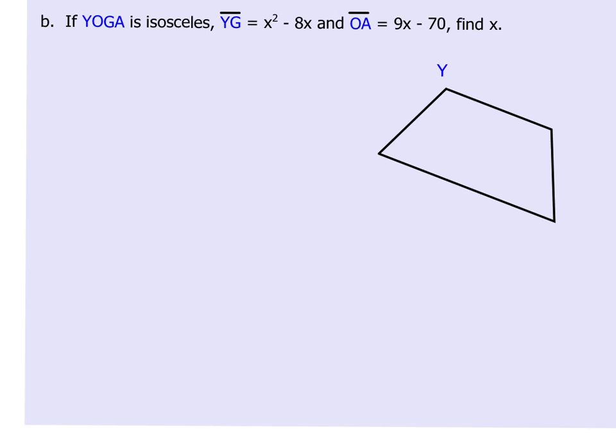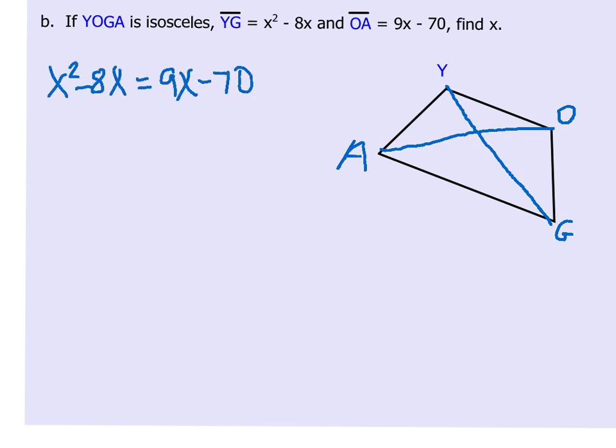In this problem, we are told once again that yoga is isosceles. So I'm going to just go ahead and label Y-O-G-A, and we are given Y-G and O-A. Those are the diagonals of this trapezoid, and one of the properties of an isosceles trapezoid is that the diagonals are congruent. So we're going to set X squared minus 8X equal to 9X minus 70.